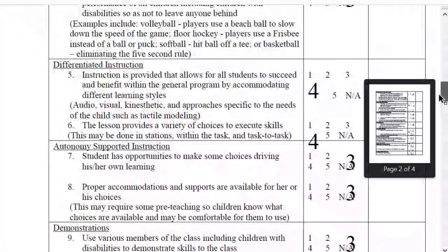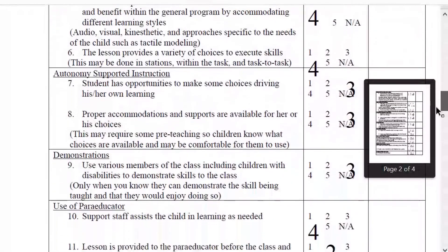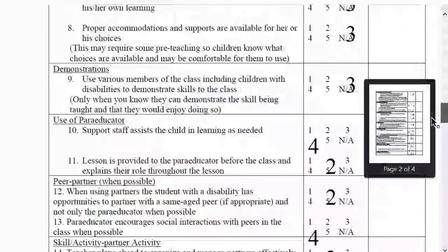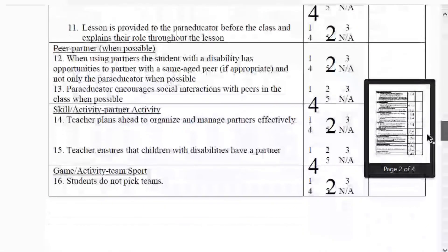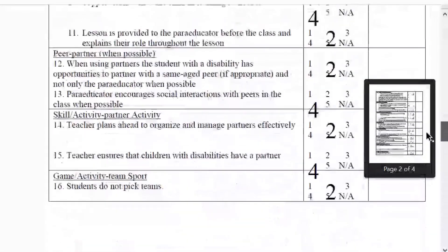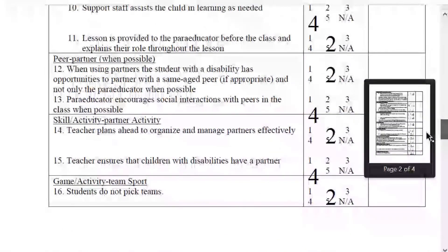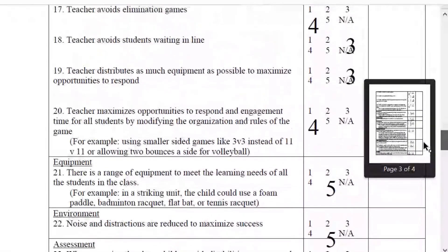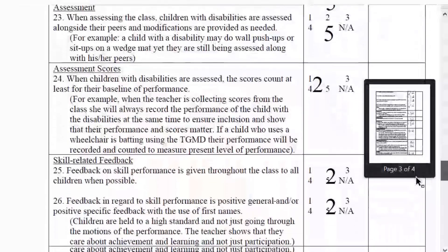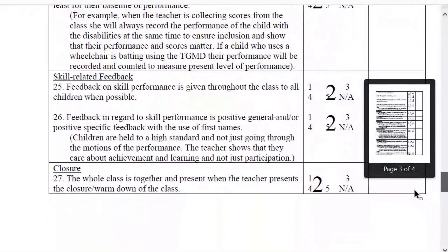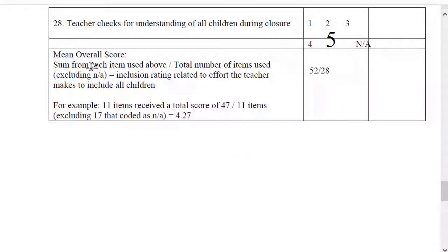For autonomy supported instruction, item 7 received a score of 3; item 8, a 3; item 9, a 3; and so on. Scores were also recorded for use of a para educator, peer partner, skill activity, partner activity, game activity, team sport, equipment, environment, assessment, and assessment scores.